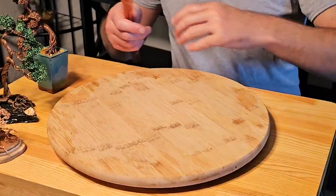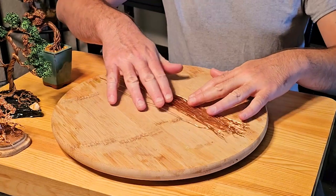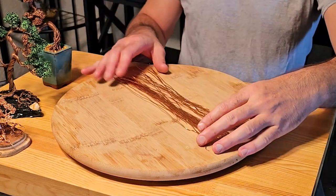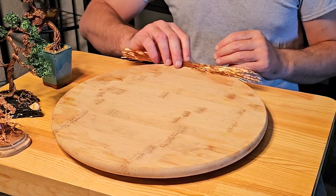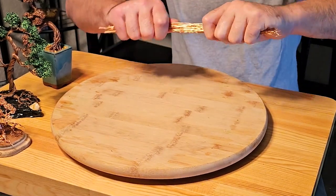So to start your wire bonsai, first you'll take equal strands of copper wire. The thickness just being the thickness of the trunk that you want to create, and then you'll twist them together.